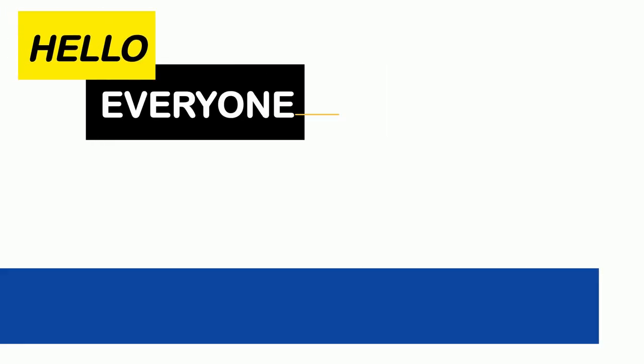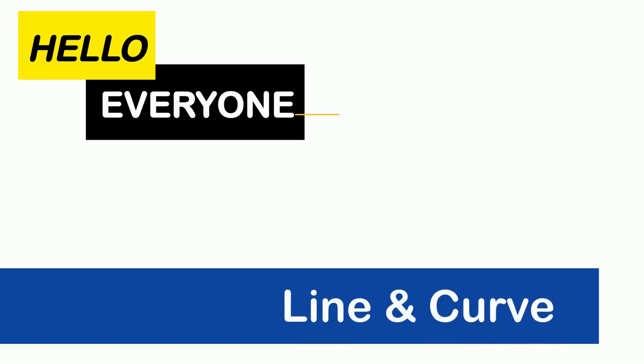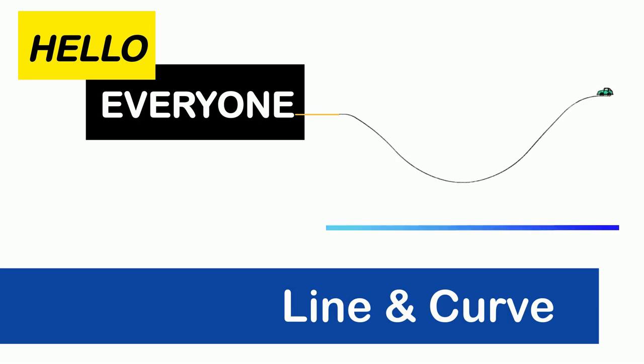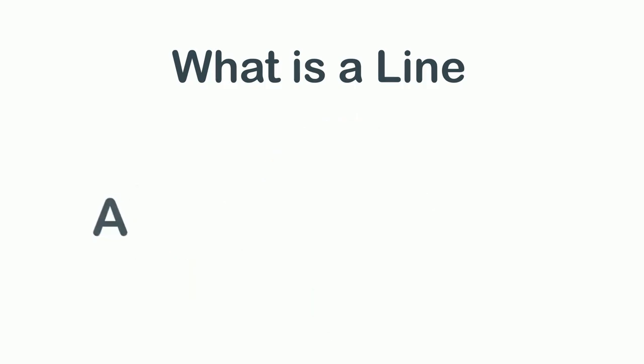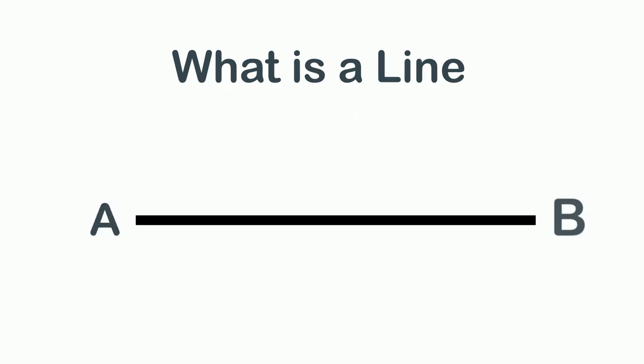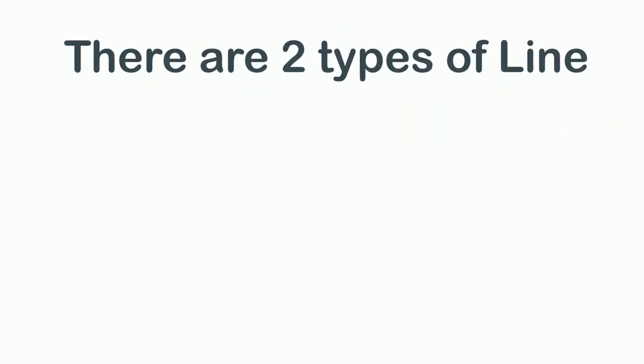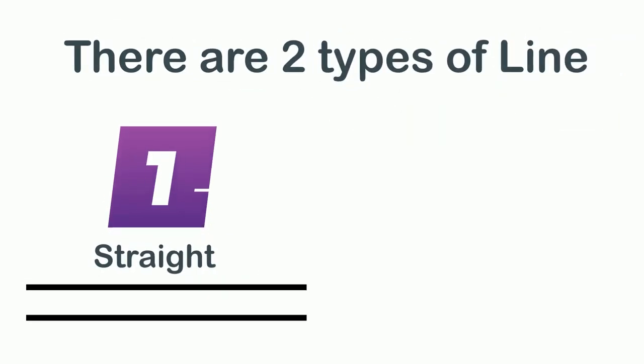Hello everyone! Today's topic is lines and curves. We will be learning about what is a line and what are straight and curved lines. When you have two points and you join them, it is called a line. There are two types of lines: straight and curved.